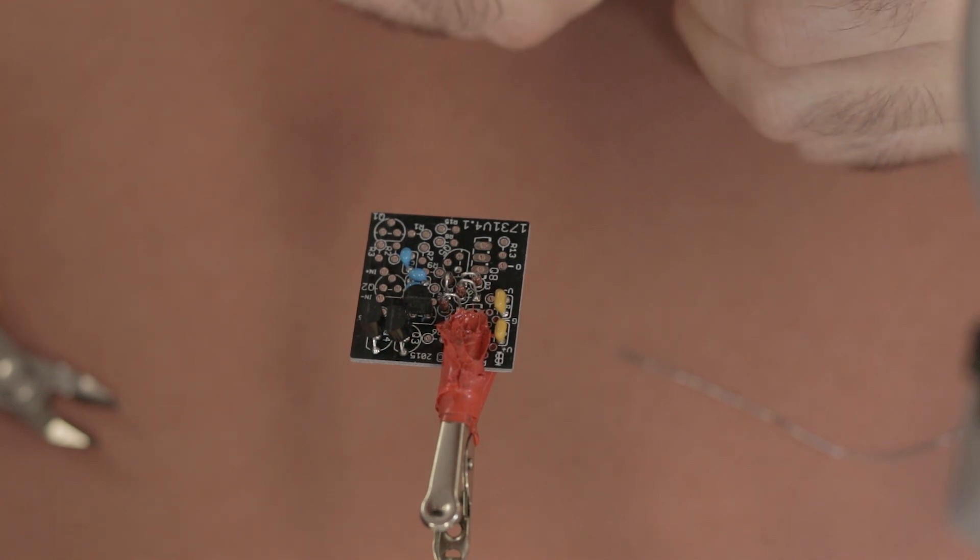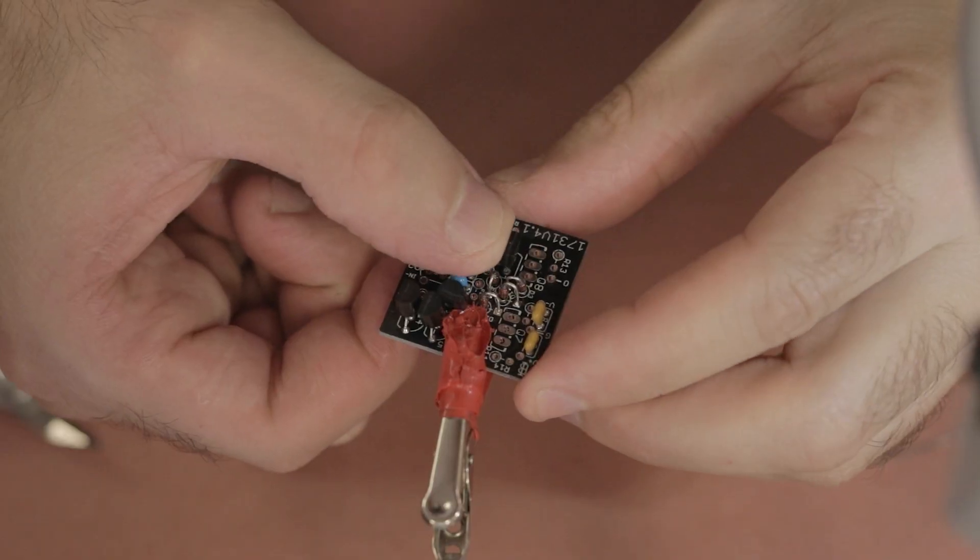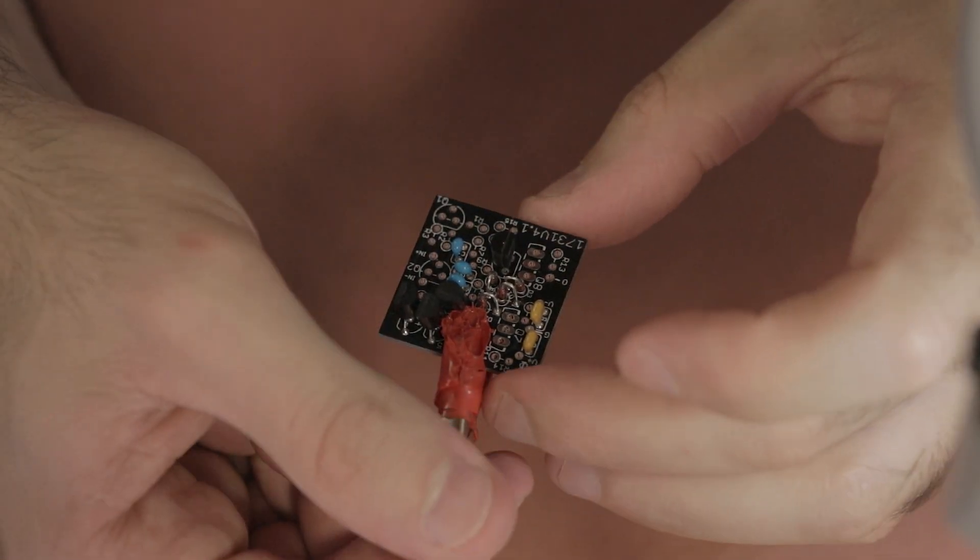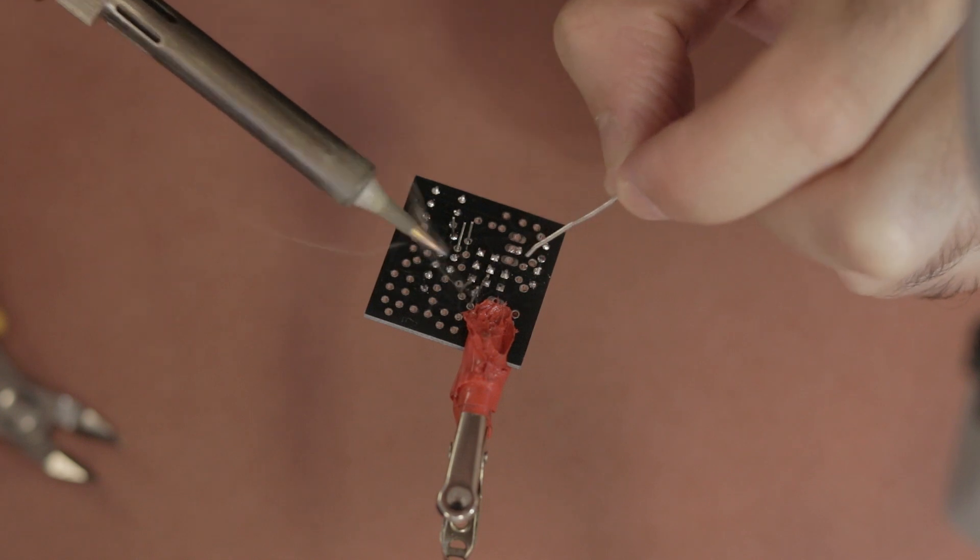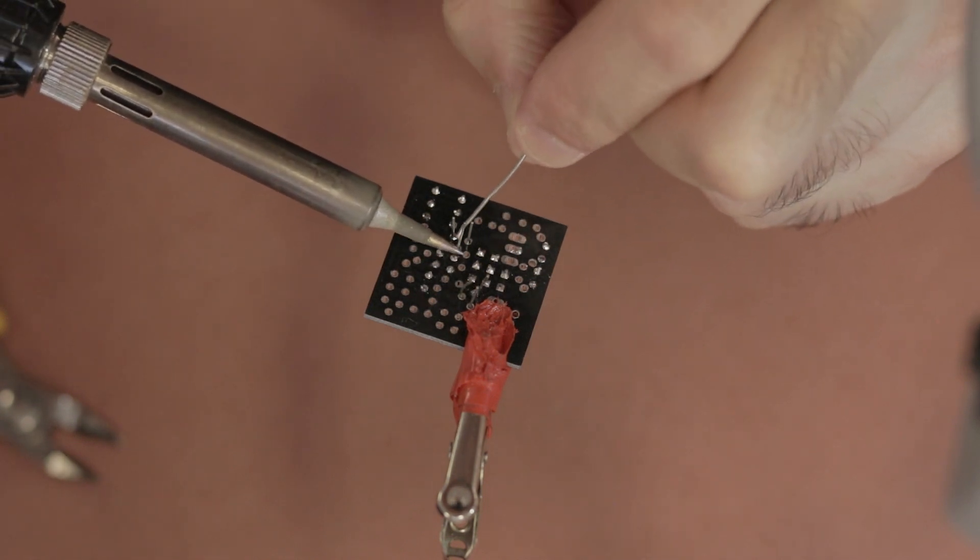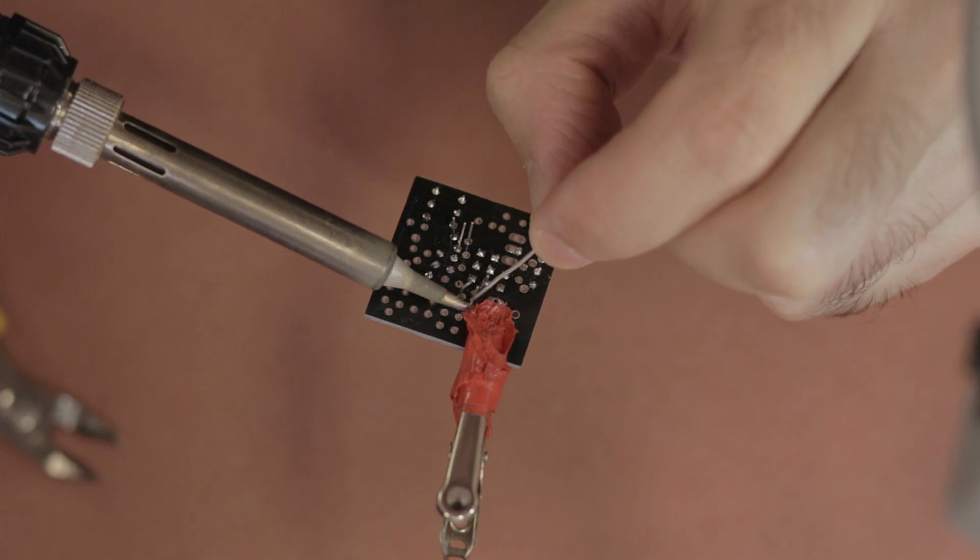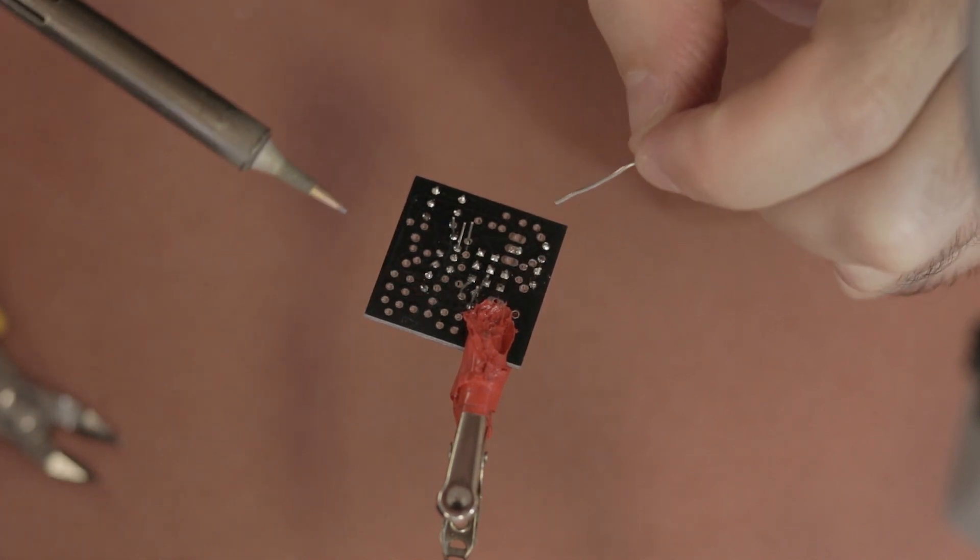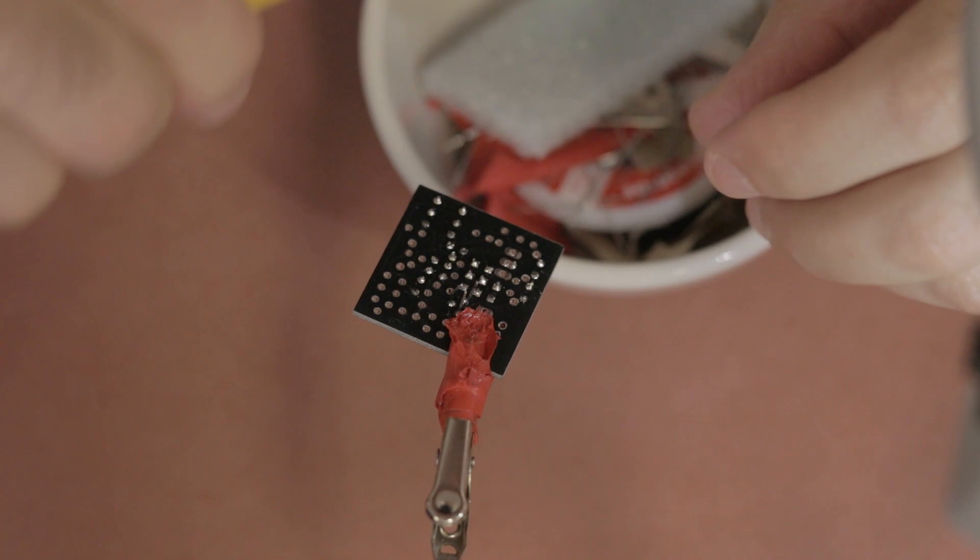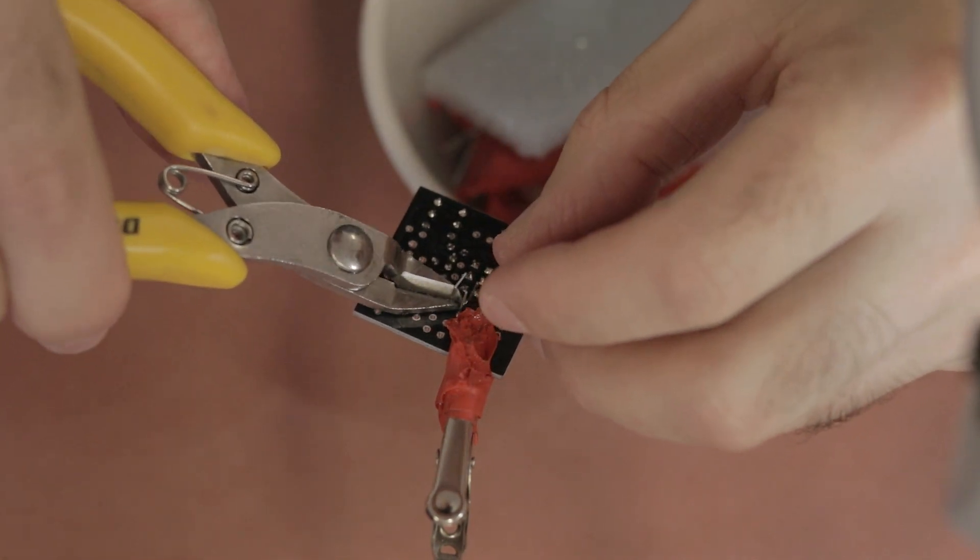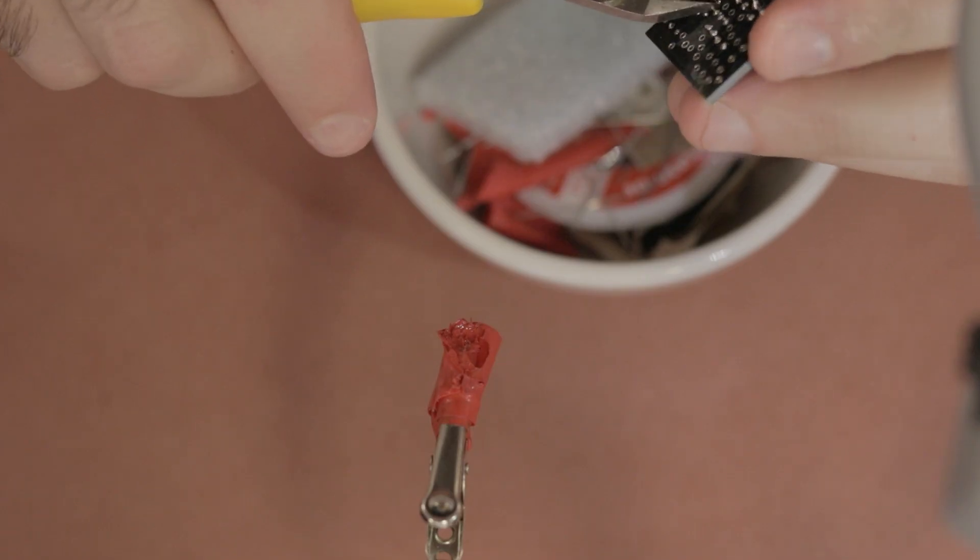And as always, you want to make sure once again that these transistors are orientated correctly. So the semicircles line up correctly on the PCB. And when you solder these, make sure, as always, that you solder a leg at a time. So solder a leg on one transistor, then swap to the other transistor and solder a leg there. And this just helps with preventing overheating the transistors while soldering. So make sure you're not rushing them or holding the iron on there for too long.